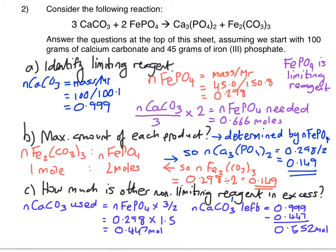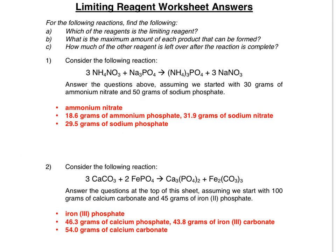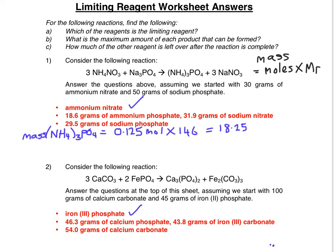So if we now have a look at the mark scheme, you can see clearly here that they've actually put the answer in grams, so we'll do a quick check to see if the moles that we've worked out actually end up with those grams. So before we do any calculations, we can tick off our ammonium nitrate and our iron(III) phosphate because we worked them out with limiting reagents.